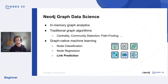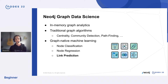From there you can run traditional graph algorithms like PageRank, which is a centrality algorithm, community detection such as Louvain, and path finding like Dijkstra to find the shortest path between two nodes. But what I want to focus on in this talk is our graph-native machine learning capabilities.